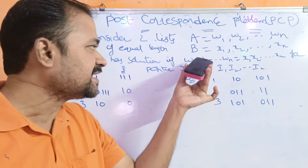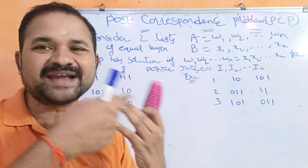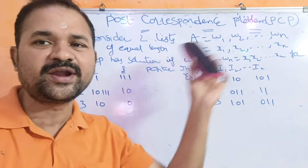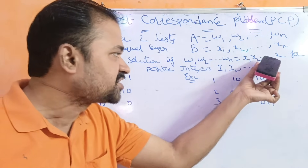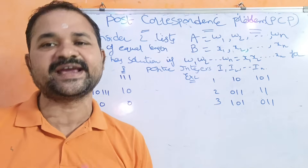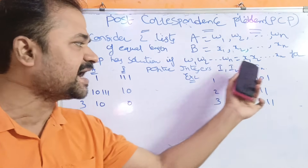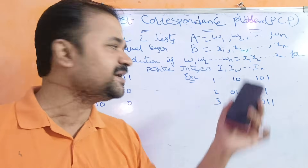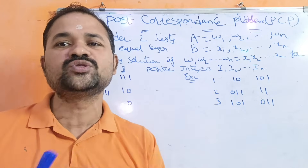That means the strings formed by concatenating W1, W2, so on WN is equal to the strings formed by concatenating X1, X2, so on XN, for all positive integers I1, I2, and so on. These are the positive integers: one, two, three, four, likewise.